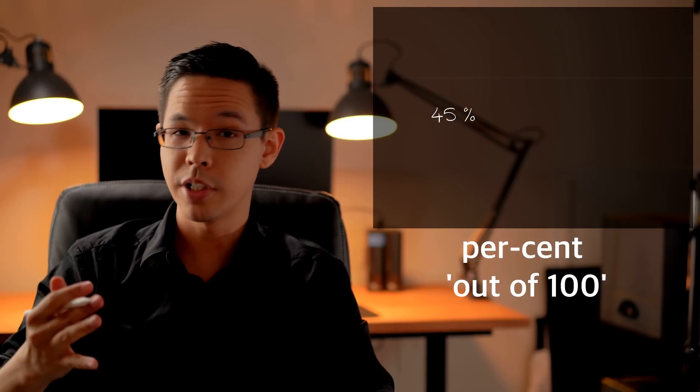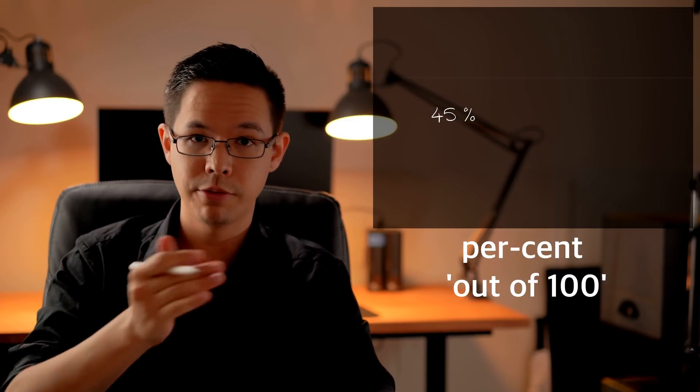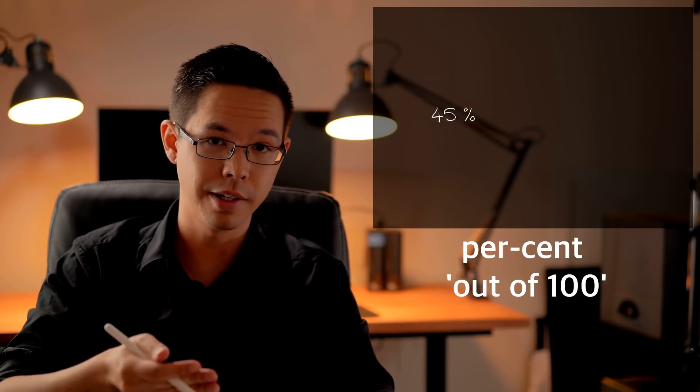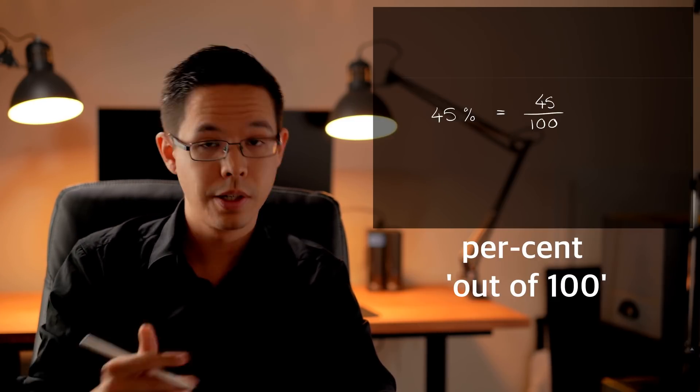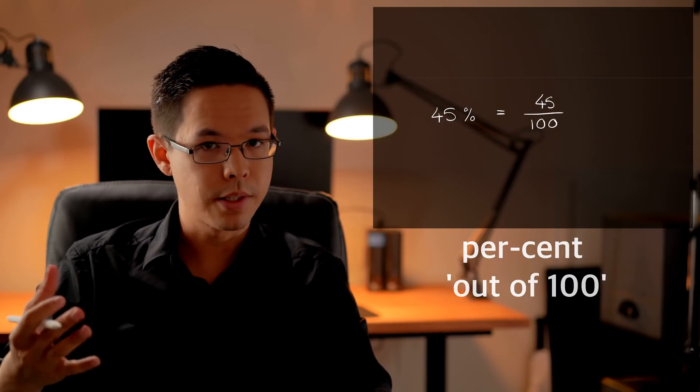Alright so now we're going to move on to trying to convert the other way. To convert 45% into a fraction. It's actually very simple. If we use the definition of percentage. So if I say 45% I'm saying 45 out of 100. I'm just going to use that and technically I have converted it into a fraction. But I'm going to give you a piece of advice here is that almost always it is preferable to simplify your fractions before you call it done.